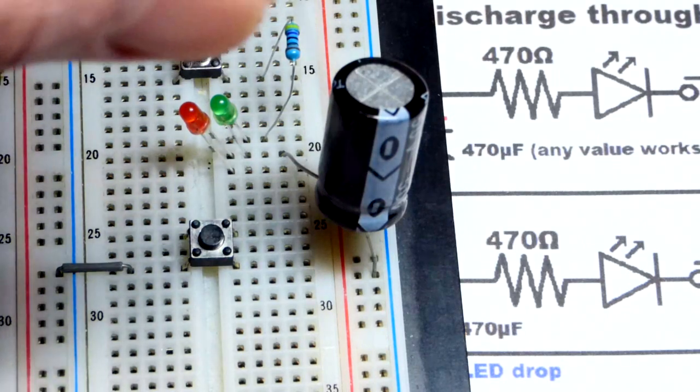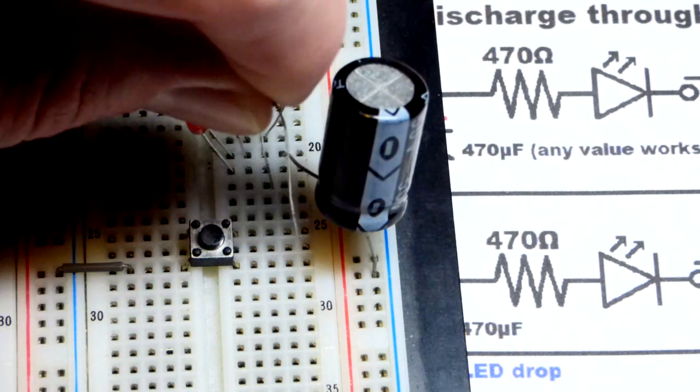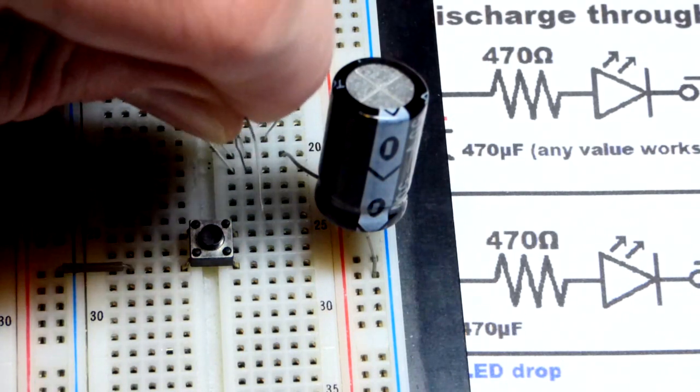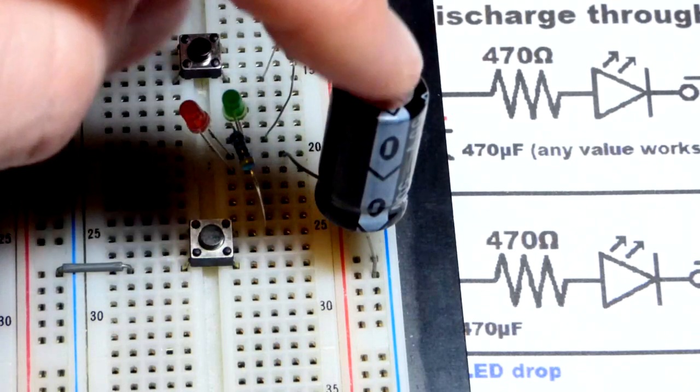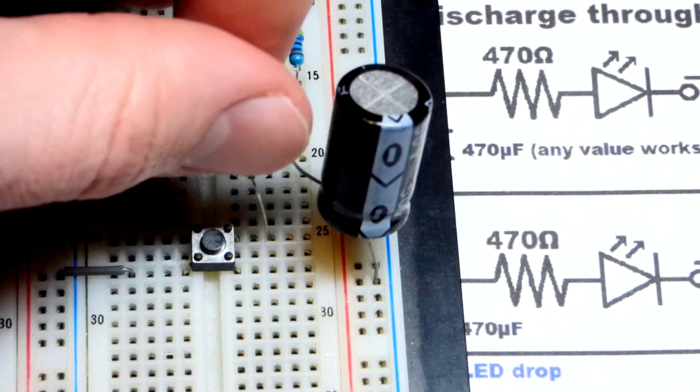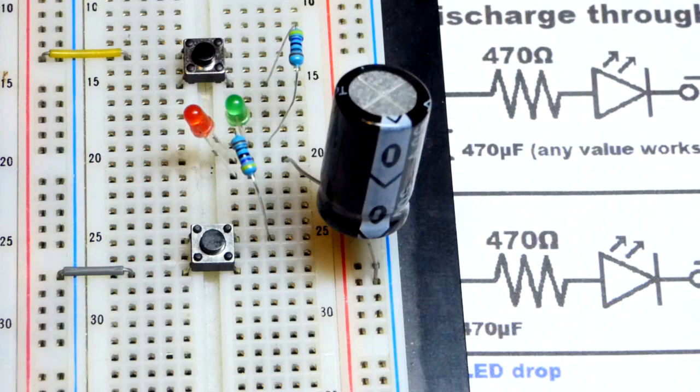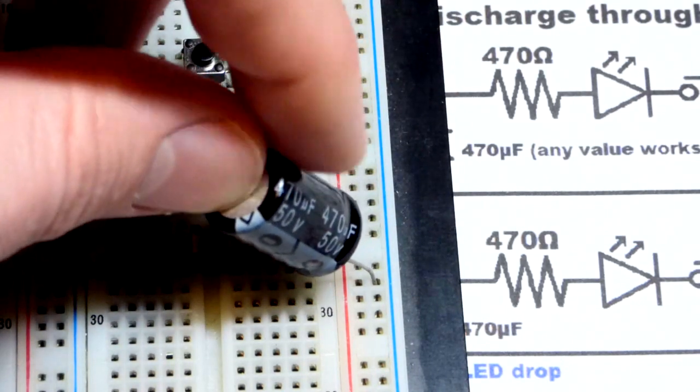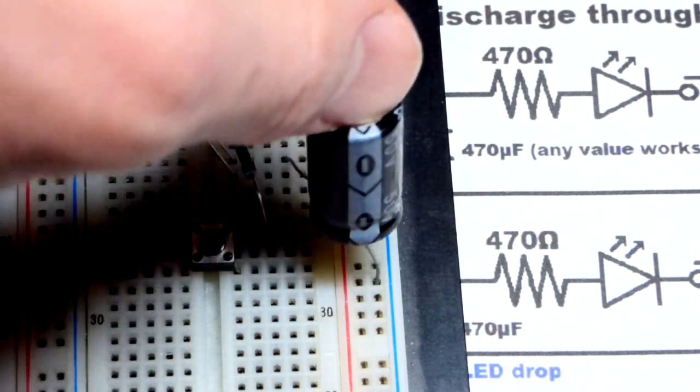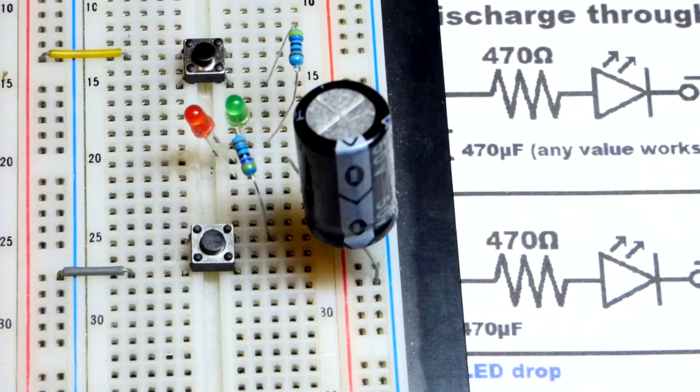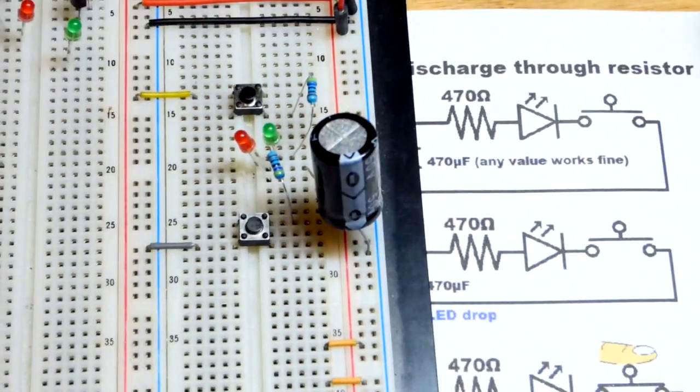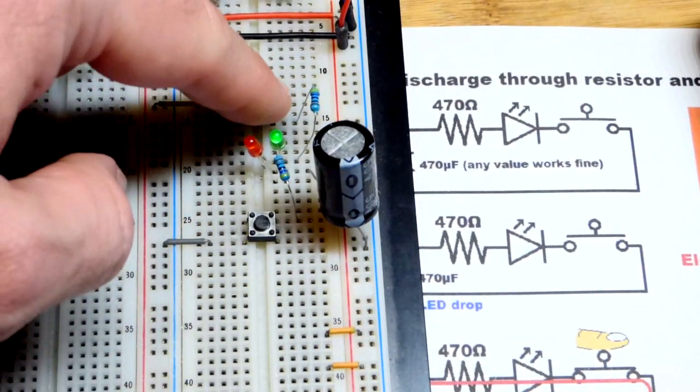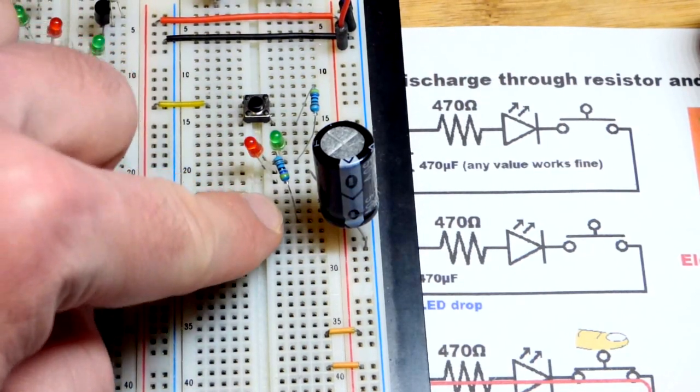We're going to grab a resistor to limit current again. That helps protect the LED plus sets the time that the capacitor takes to charge. We could use any value capacitor. I'm using 470 microfarad. Any capacitor works perfectly fine. We already charged it. Now we have a path to discharge it.